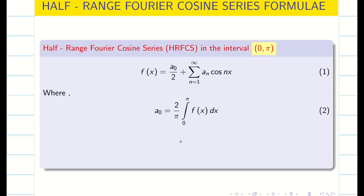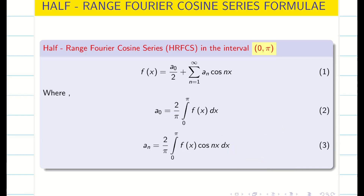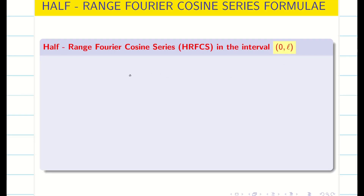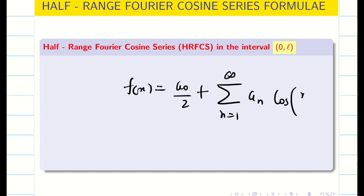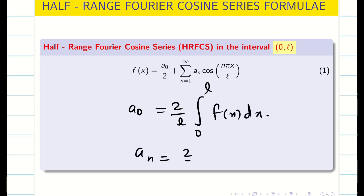For half-range Fourier cosine series on (0, π), a₀ is 2 times (1/π) integral, and aₙ is (2/π) integral from 0 to π of f(x) cos(nx) dx. For the interval (0, L), f(x) can be written as a₀/2 plus summation from n=1 to infinity of aₙ cos(nπx/L), where a₀ = (2/L) integral from 0 to L of f(x) dx, and aₙ = (2/L) integral from 0 to L of f(x) cos(nπx/L) dx.